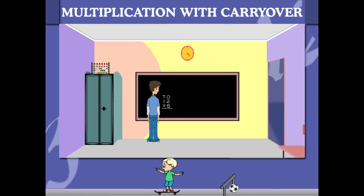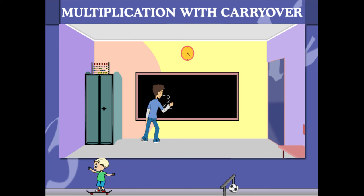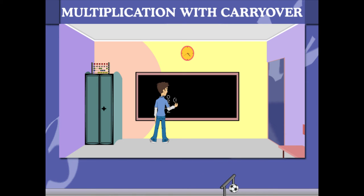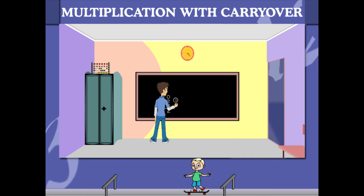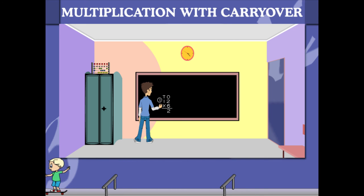He multiplies 2 of 12 by 6 and gets 12. He writes 2 and carries 1 over to the tens side.